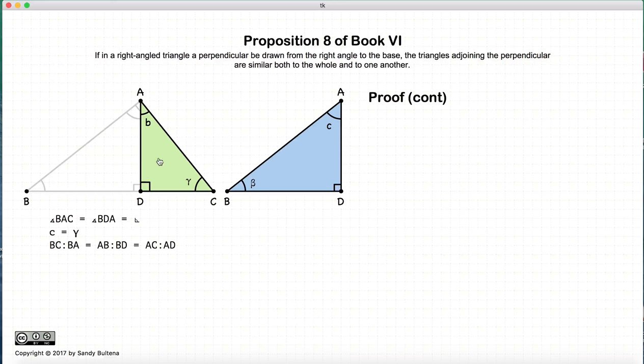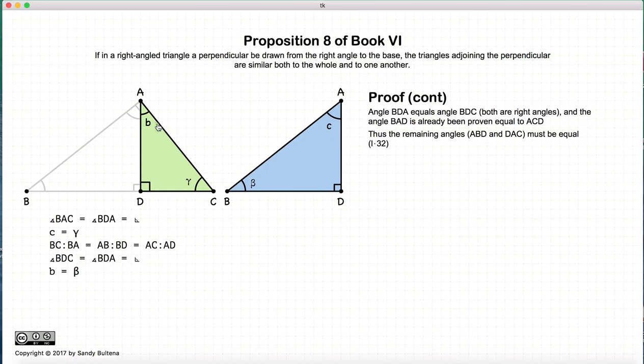Now we could in principle have done that for ADC. So I'm not going to redo it because it certainly was possible to do it. But now we'd like to show that ADC is similar to ABD. So again we have two triangles where we had C and gamma are equal from our previous part of our proof. We have two right angles. So again the third angle must be equal. So beta and B are equal.